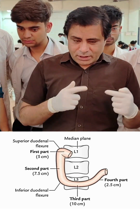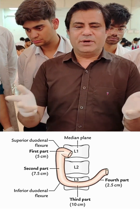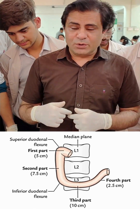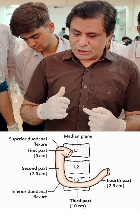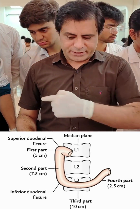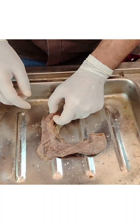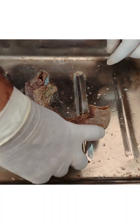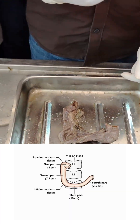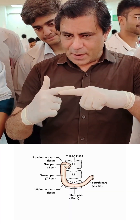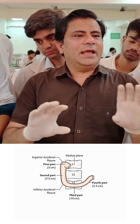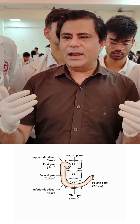Now for the vertebral level — remember, the transpyloric plane passes through L1. That means the pylorus is at L1, and the first part of the Duodenum continues from the pylorus. Rather than going horizontally to the right, it is directed backwards and upward. So the first part lies opposite to L1 vertebra and is about 5 cm, which is 2 inches.